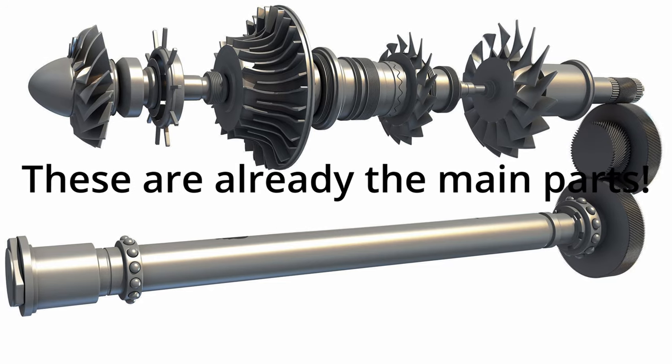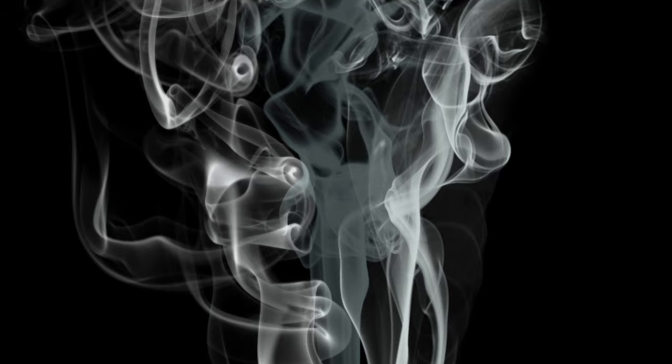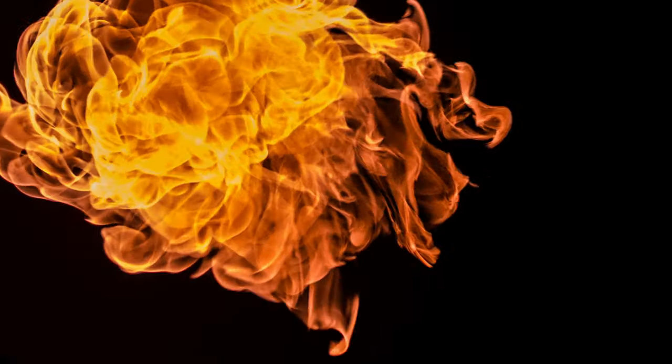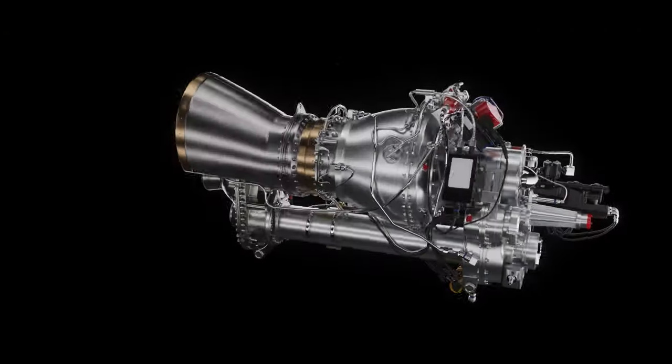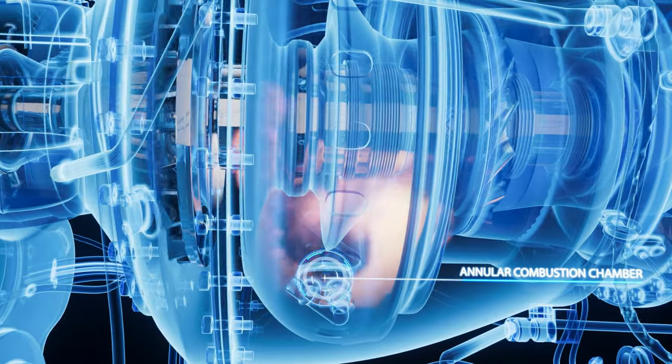The working principle of the engine is very simple. The combustion of kerosene produces a light gas that expands due to the heat and generates high pressure. The Arial 2 engine burns the air-fuel mixture in an annular combustion chamber.